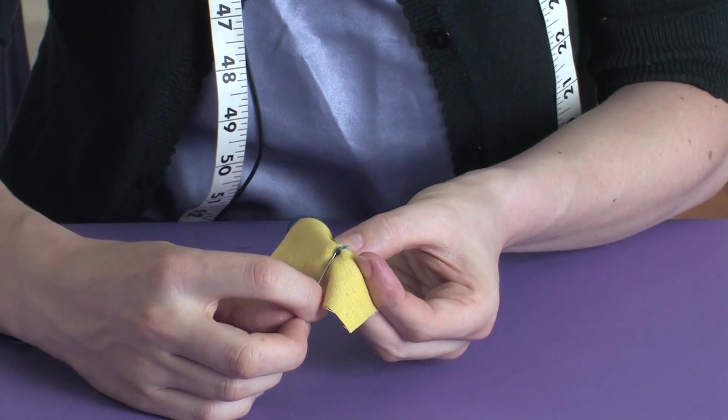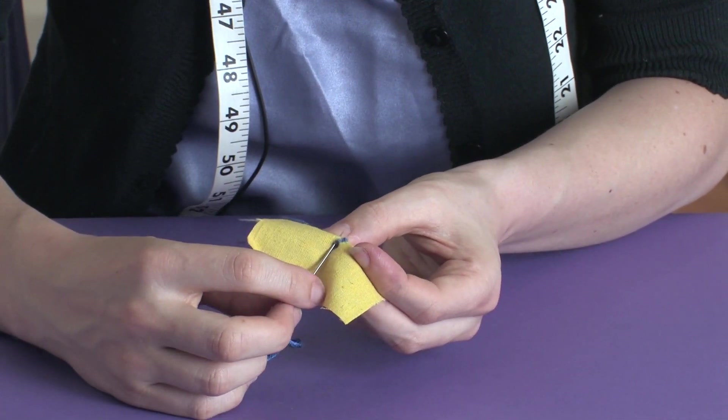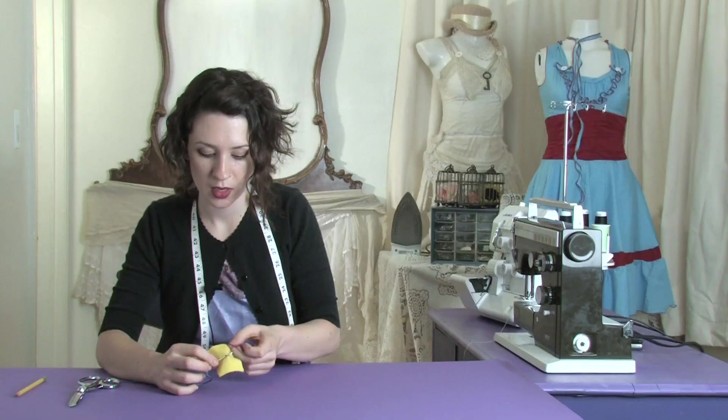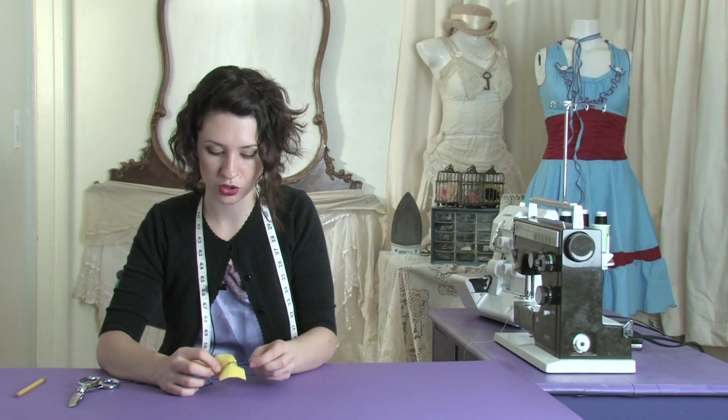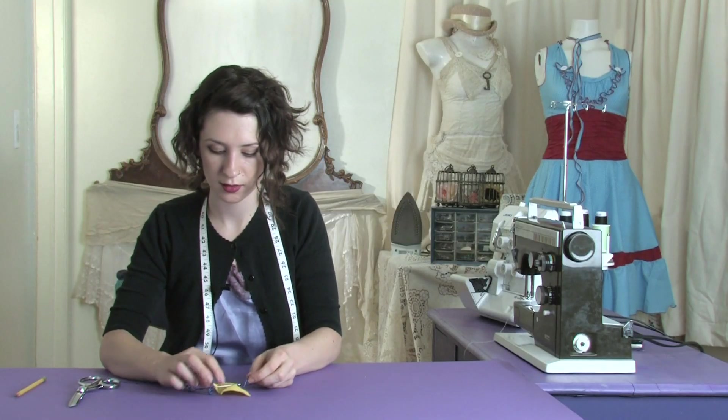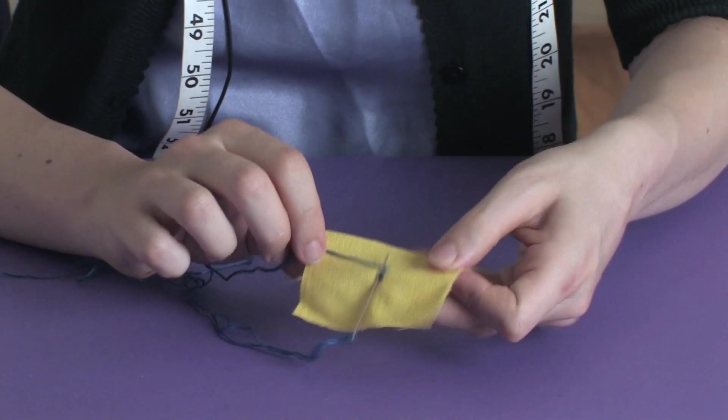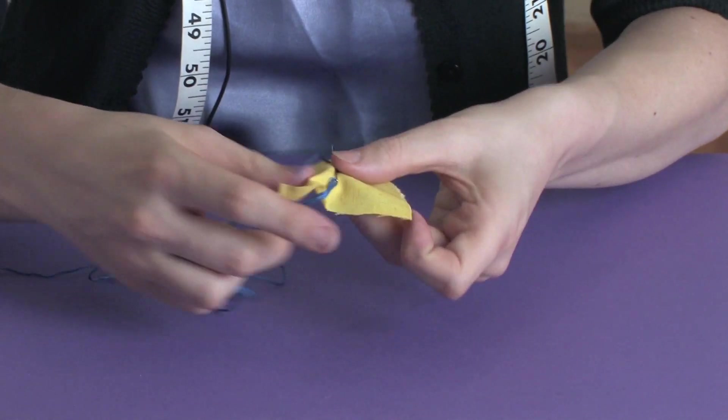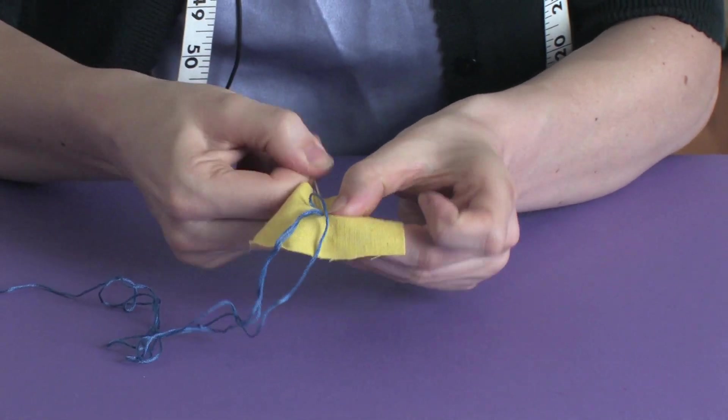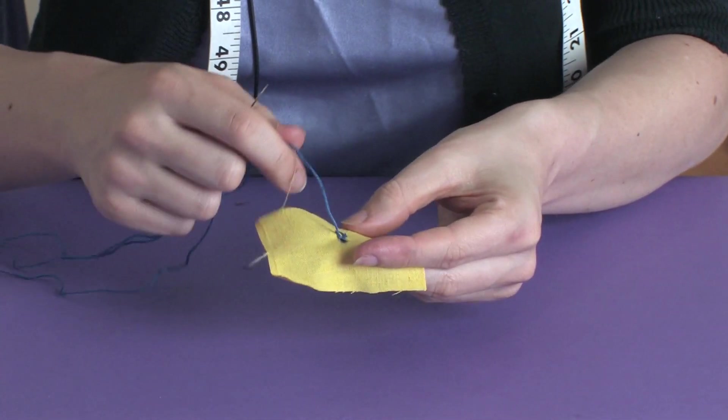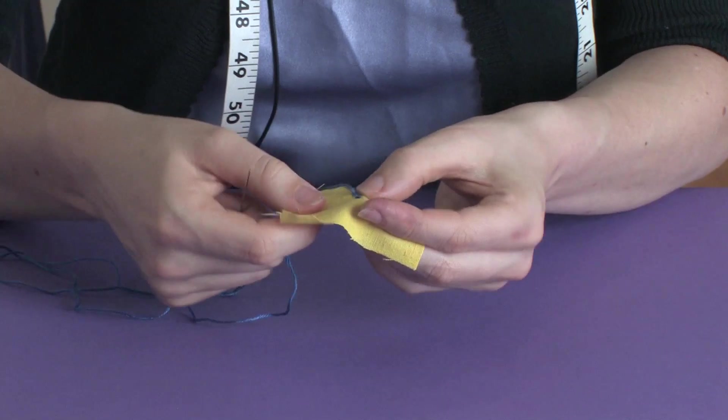Now the trick is making sure that this thread from your last stitch is going under your needle when it's coming back out through the fabric. And that's going to create that blanket stitch.